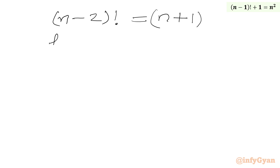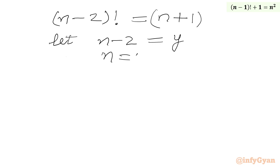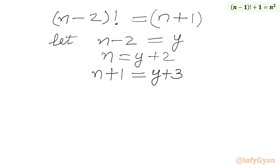Now we will use substitution. Let n minus 2 equal y. So I can write y factorial on the left hand side, and (n plus 1) on the right hand side. From y equal to n minus 2, we get n equal to y plus 2. Therefore n plus 1 equals y plus 3. So we write y factorial equal to y plus 3.